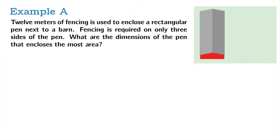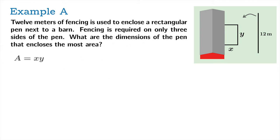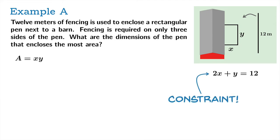Here's our first example. 12 meters of fencing is used to enclose a rectangular pen next to a barn. Fencing is required on only three sides of the pen. What are the dimensions of the pen that encloses the most area? Let's call the width X and the other dimension Y. The area is X times Y, but that's one too many variables. We'll use X as our parameter and note that 2X plus Y must equal 12, since we're using 12 meters of fence. This is our constraint, and from it we discover that Y equals 12 minus 2X.